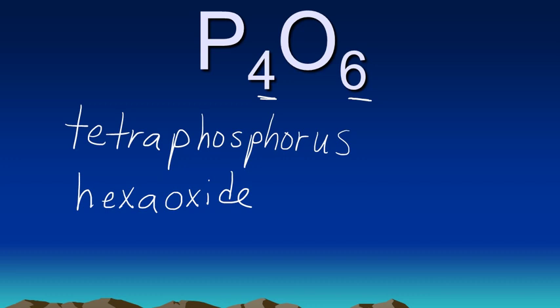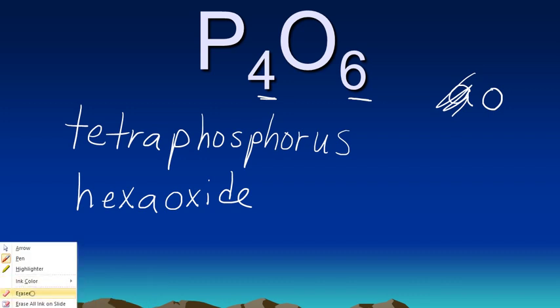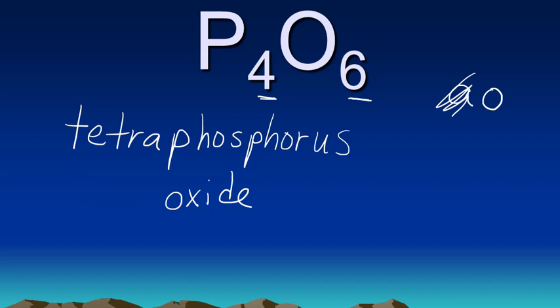Now you might try to say that and notice that it's a little bit difficult to pronounce. Generally speaking, if we ever have a case where there's an A next to an O, we just drop the A. So instead of calling this hexaoxide, we actually call this hexoxide. Tetraphosphorus hexoxide.